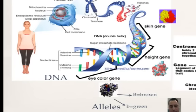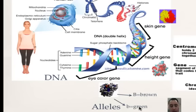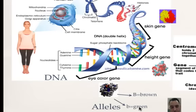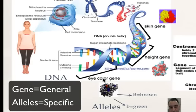A gene can have two forms — it can make a protein that is a different form. Big B will be brown eye color and little b will be green. Alleles are the different forms of a gene. So you have the eye color gene — its two forms are brown or green. Genes are very general, but alleles get into the specifics of the different forms.